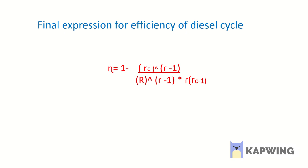The internal combustion engine which uses diesel as a fuel works on the diesel cycle. The efficiency of the diesel cycle and the Otto cycle are different. The normal compression ratio for the diesel cycle is 16 to 20, which is much higher than that of the Otto cycle.